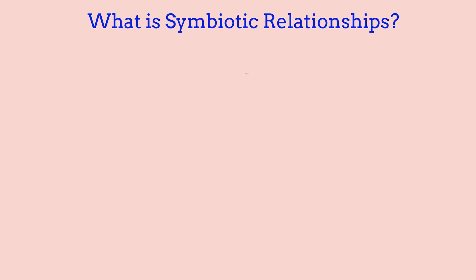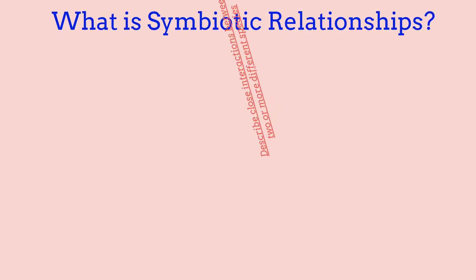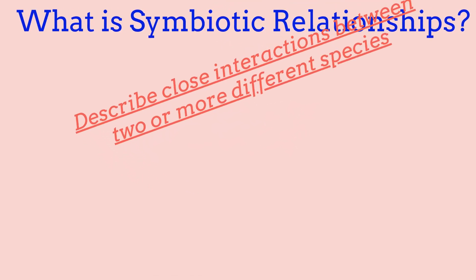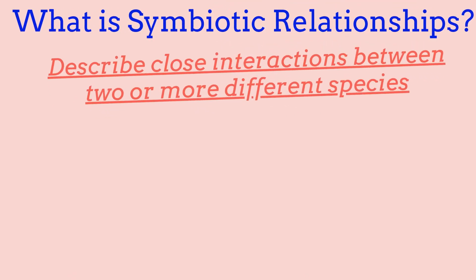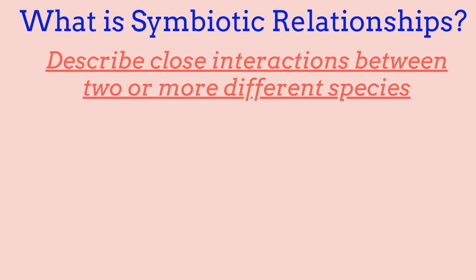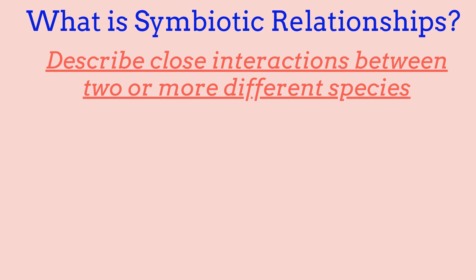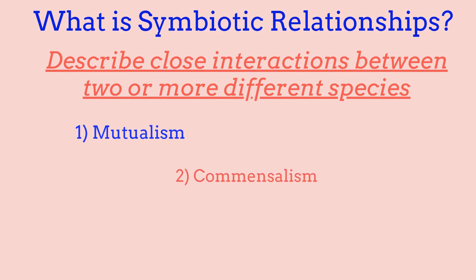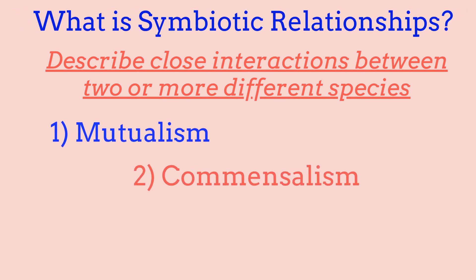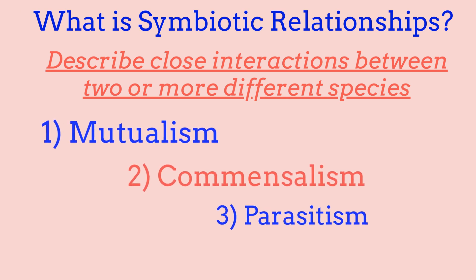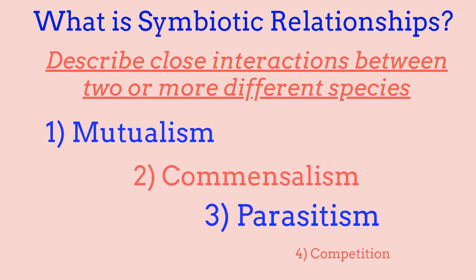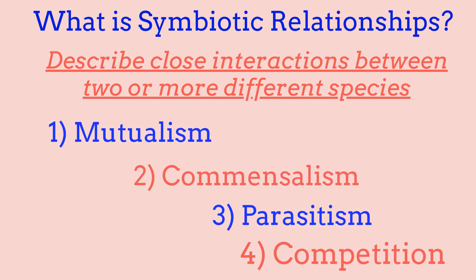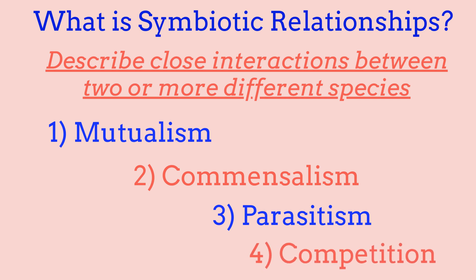Symbiotic relationships describe interactions between two or more species. There are four types of symbiotic relationships: mutualism, commensalism, parasitism, and competition.